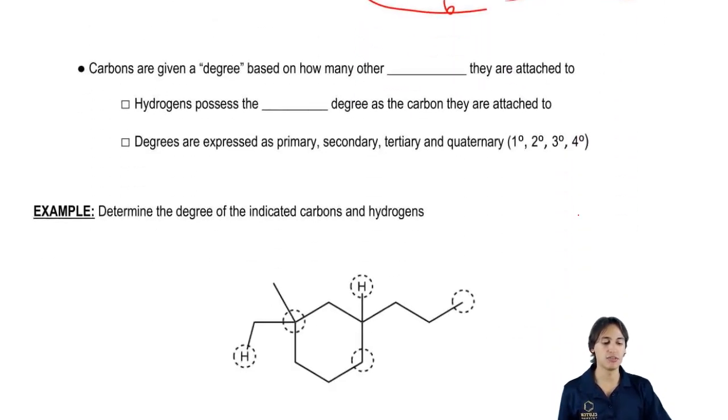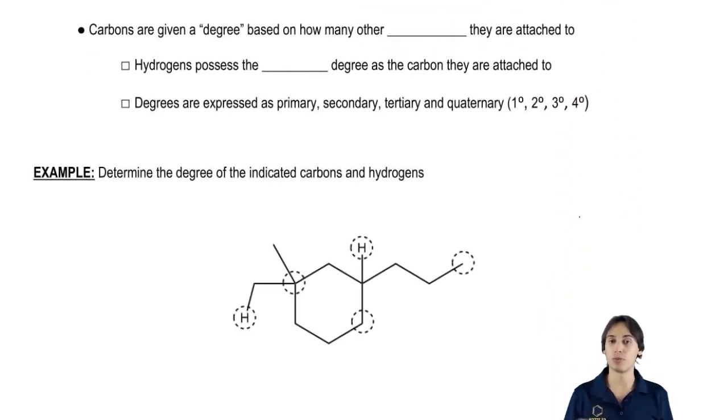Lastly we have to figure out giving degrees for carbons and hydrogens. Degrees just have to do with how many other things are attached to my object or to my target.